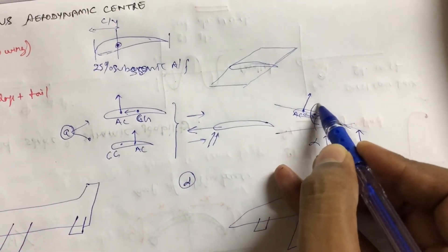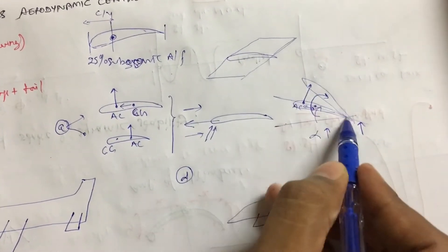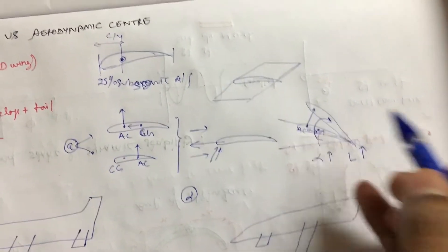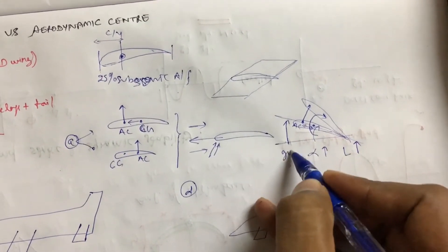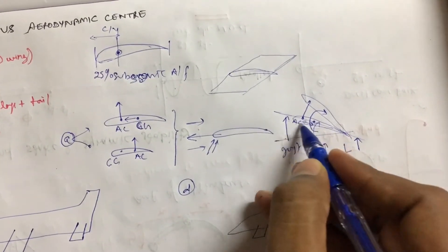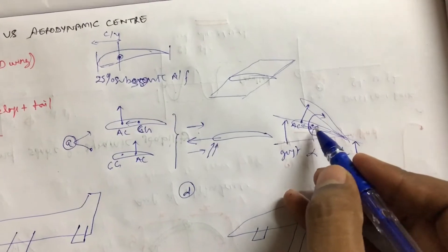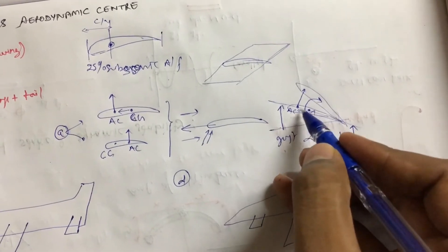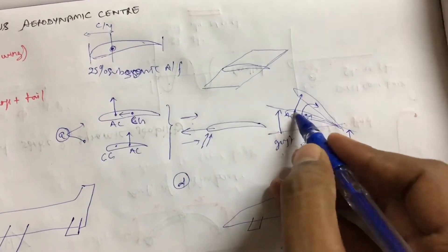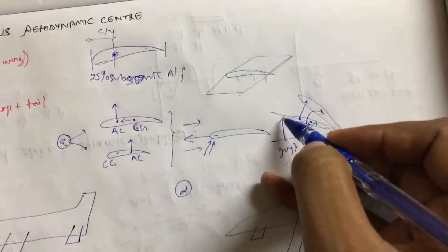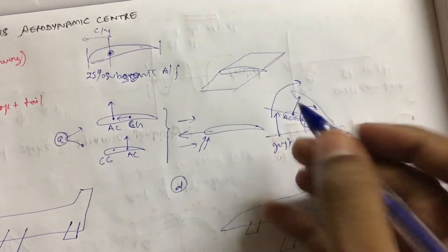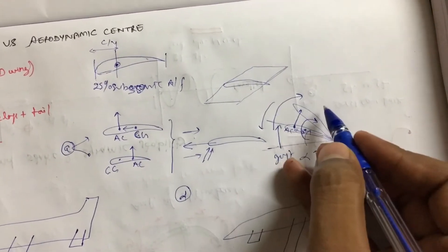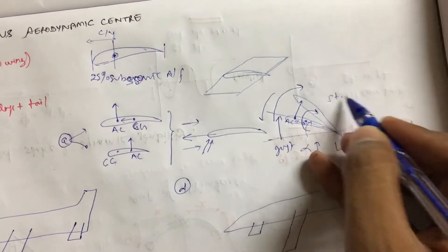Because of that moment, this airfoil will turn more. A gust came, some disturbance displaced it. If this were statically stable, it must have a tendency to come back. But what is happening? My AC is ahead of CG, so it is going away — not coming towards the equilibrium position, but going more away. So this is statically unstable. If this design is statically unstable, there is no need to discuss dynamic stability.